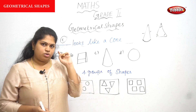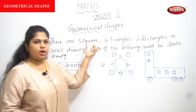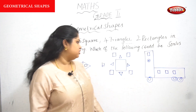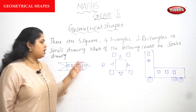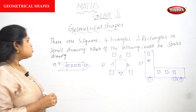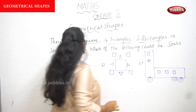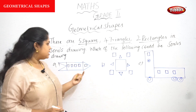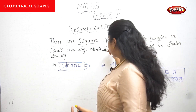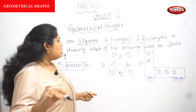Shapes is a very easy topic, but you should understand the difference between rectangle, triangle, cone, and others. Next activity: there are five squares, four triangles, and two rectangles in Sono's drawing. Which of the following could be Sono's drawing? Let's check picture A — there are five squares and only three triangles, so this is not Sono's drawing.